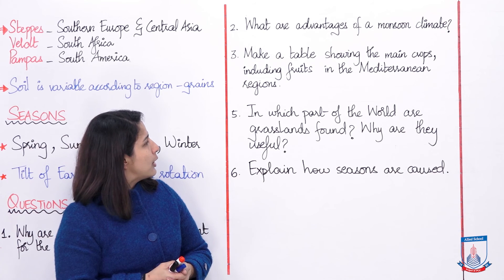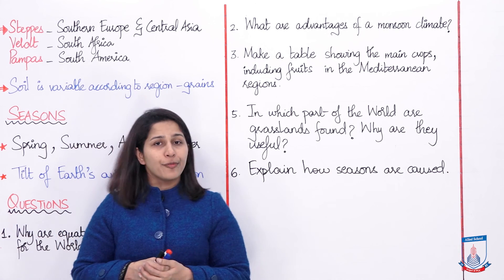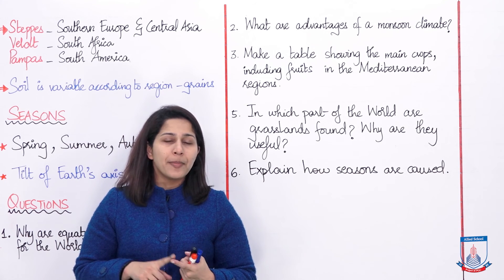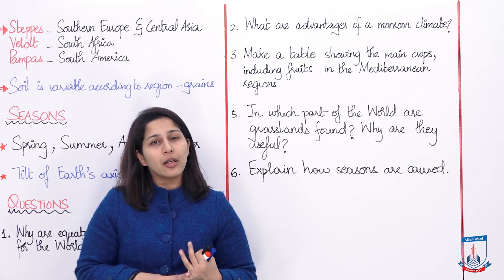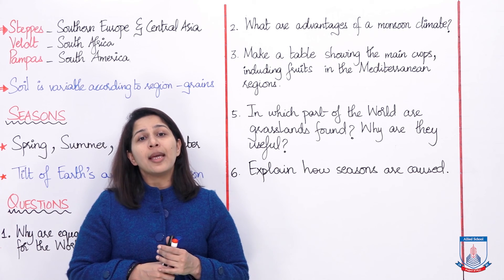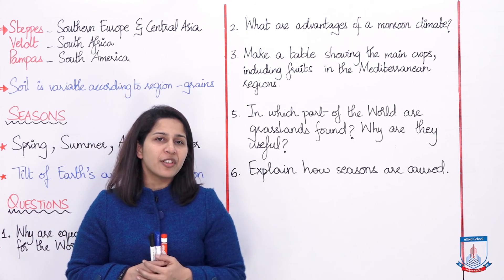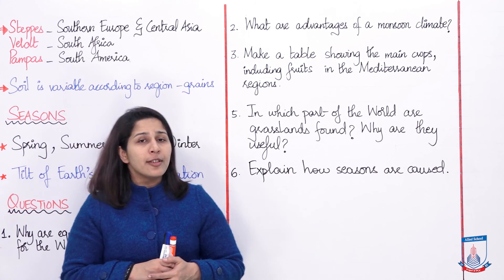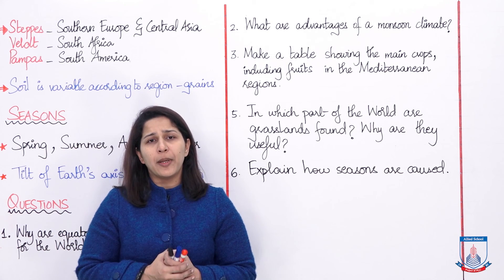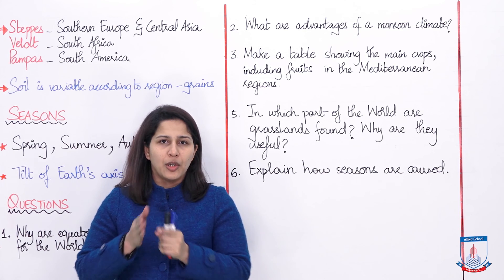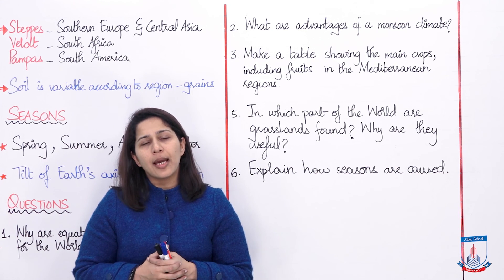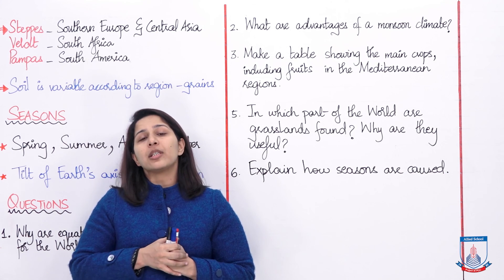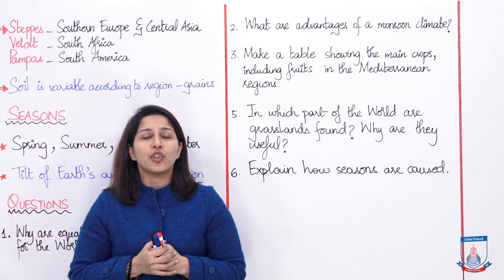The fifth question is: in which part of the world are grasslands found, and why are they useful? Grasslands are found in southern Europe, central Asia, south Africa, south America, and north America. They are useful because grains are grown there. The next question: explain how seasons are caused. I just explained it — you can pause the video, rewind a little, listen again to how seasons are caused, take help from the picture shared, and this is how you will be able to answer the questions of this chapter.